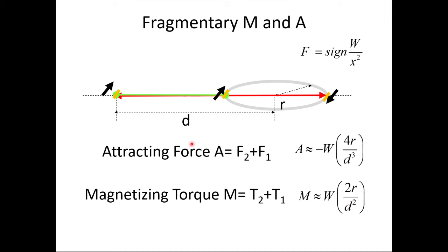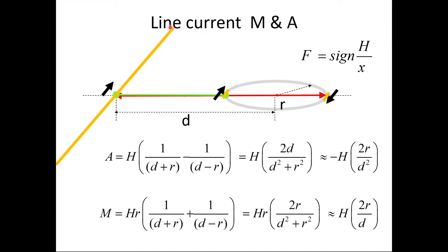Now we move on to a line current. If we take a line current that extends very far — to the point where making it longer doesn't affect the ring much more — we can compute the attracting force. We'll wrap the constants for this case into a variable H. The attracting force becomes two times the radius divided by the distance squared. So the attraction force for a line current is inverse squared, which is better than the inverse cube we saw for the fragmentary case.